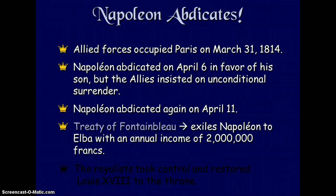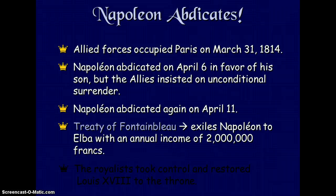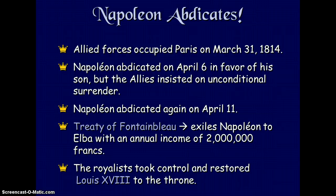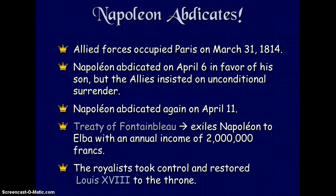The Treaty of Fontainebleau exiled Napoleon to Elba with an annual income of two million francs. The royalists took control and restored King Louis XVIII to the throne. Napoleon was gone and the French monarchy was back.